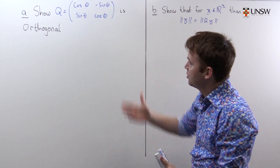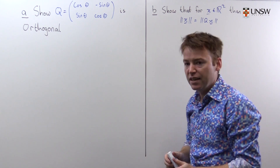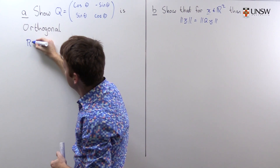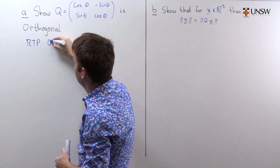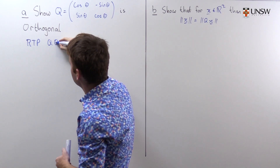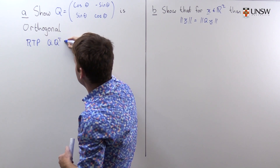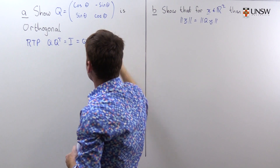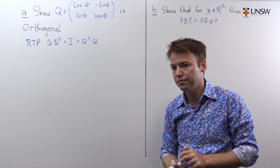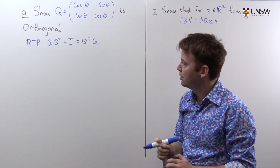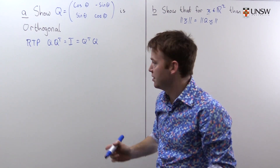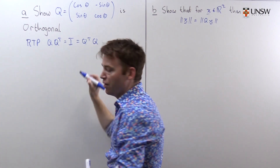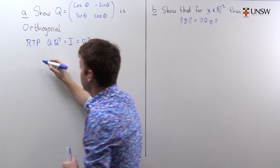Let us begin. To show that this matrix is orthogonal means we have to show that Q times Q transpose is equal to the identity, which is also equal to Q transpose Q. Well, this should be fairly easy to do — we just take Q, multiply by its transpose, and we hope to get the identity. Let's do that.